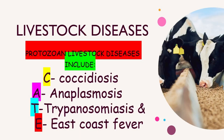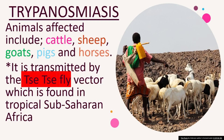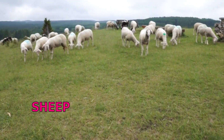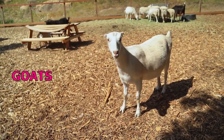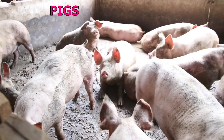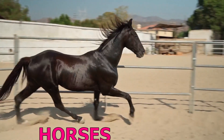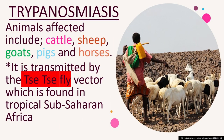Protozoan livestock diseases include coccidiosis, anaplasmosis, trypanosomiasis, and East Coast fever. Trypanosomiasis affects animals including cattle, sheep, goats, pigs, and horses. It is transmitted by the tsetse fly vector, which is found in tropical sub-Saharan Africa.